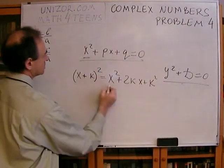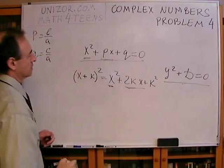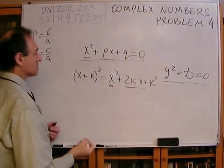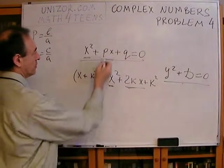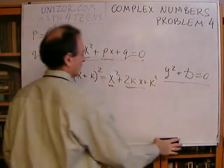So, I would like this to be this, and I would like this to be this. So, what is my K? K is obviously P divided by 2. So, what I will do is the following.